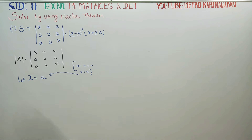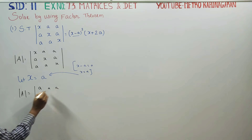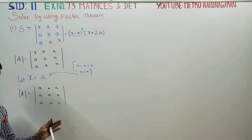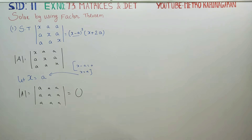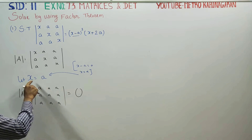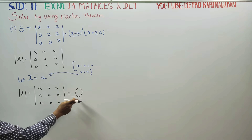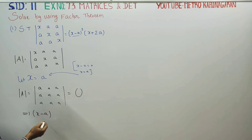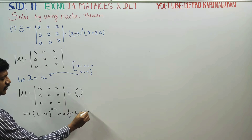Let x equal to a. Substituting x equal to a, all entries become a, a, a in every row. Row 2 and row 3 are identical — when any two rows are identical the determinant is zero. So (x minus a) is a factor of Delta.